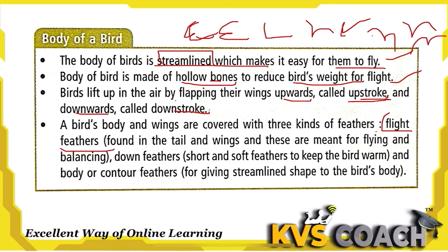The second type is down feathers — short and soft feathers that keep the bird's body warm. The third type is body or contour feathers, which give a streamlined shape to the bird's body. So birds have three types of feathers: flight feather, down feather, and body contour feather.